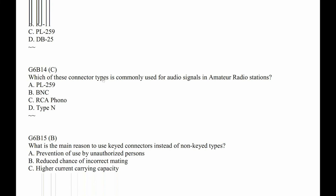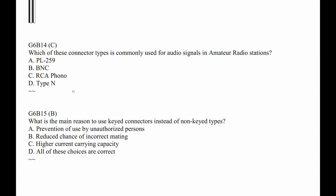G6B14. Which of these connector types is commonly used for audio signals in amateur radio stations? The answer is C, RCA phono. Do you know why it's called a phono plug? The reason is that radios in the 1930s had an RCA phono jack on the back, and you plugged your 45 record player into it. It would stack up the records on the spindle and play through the radio — it was high tech at the time. So RCA phono is named because of RCA phonographs plugged into the back of AM radios.